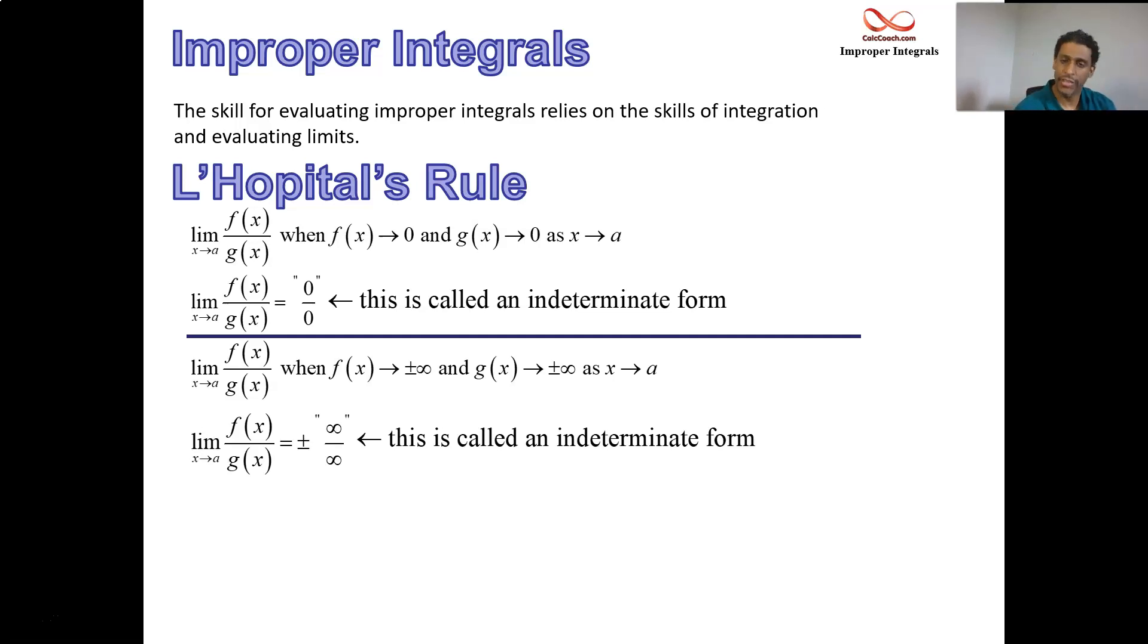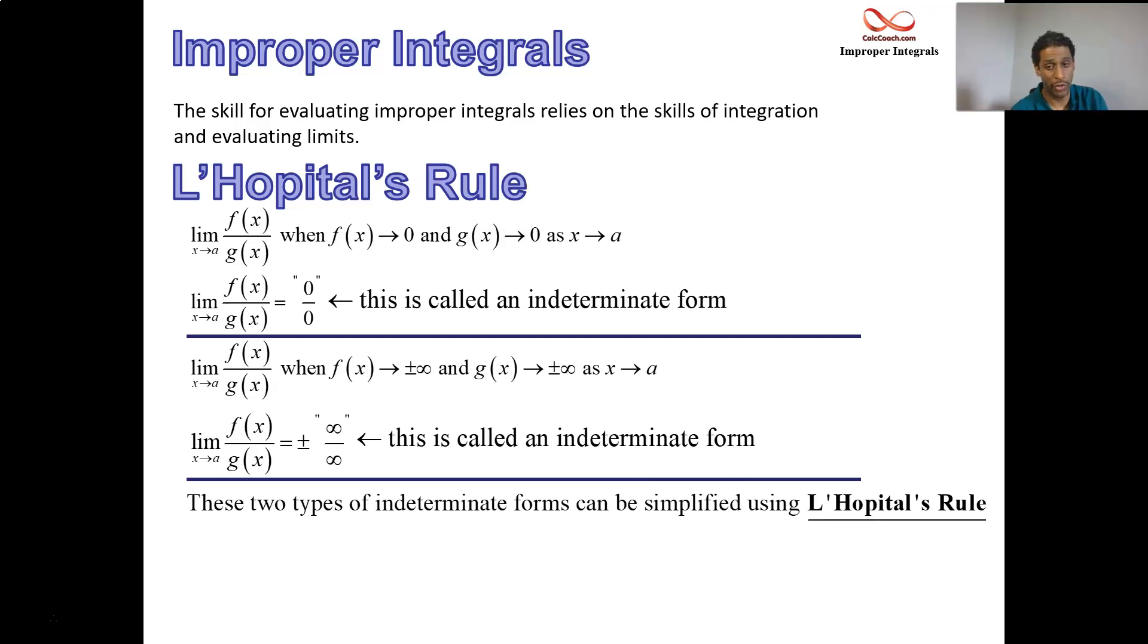The way L'Hopital's rule works, hopefully you remember, is that you trade your limit in for a new limit. Provided this new limit exists, where the new limit is the derivative of the numerator divided by the derivative of the denominator.